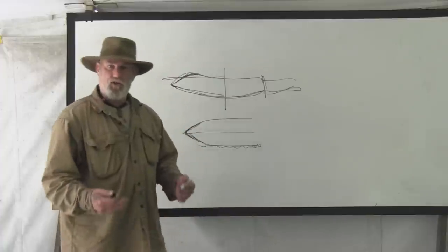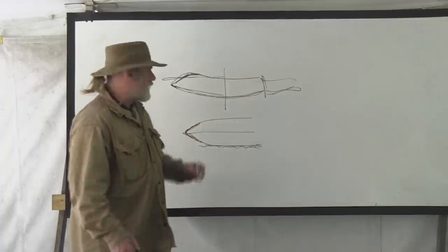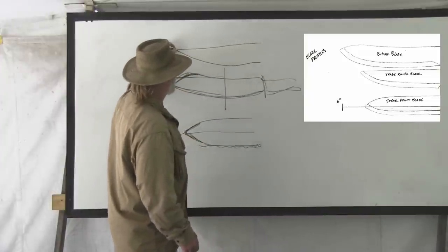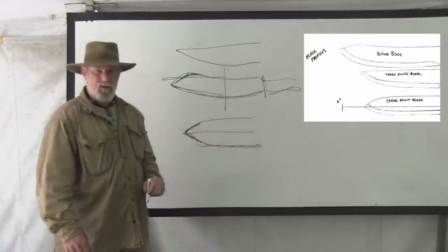And then you have the regular French trade knife which was a French style butchering knife that was just straight across here with a sweeping belly here to a point that looked very similar to a kitchen knife.